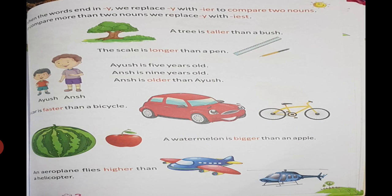A tree is taller than a bush. The scale is longer than a pen. Now, tree or bush - two things are being compared, so we used comparative degree. If there are more than one or two, then what do we do? We use superlative degree.